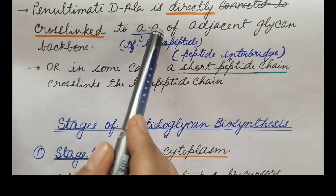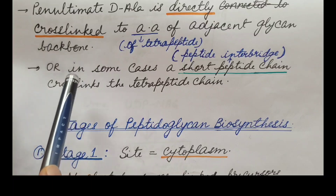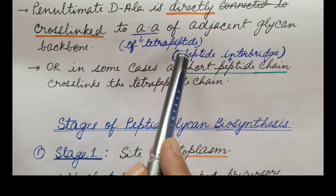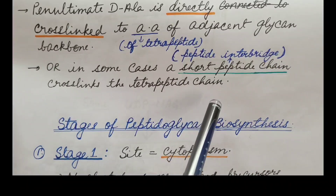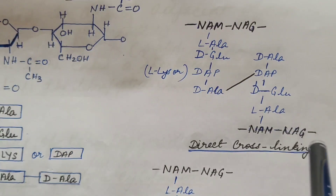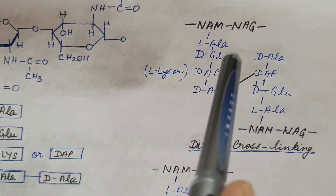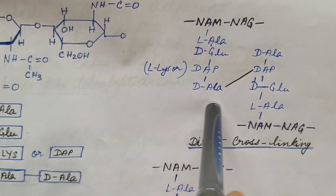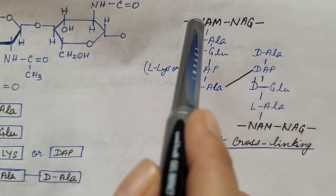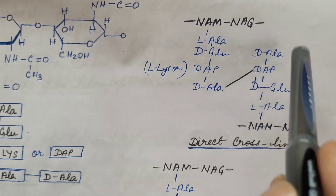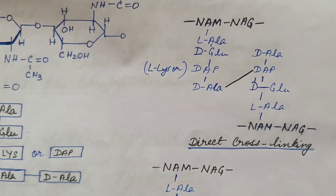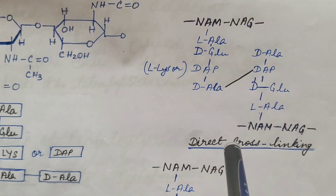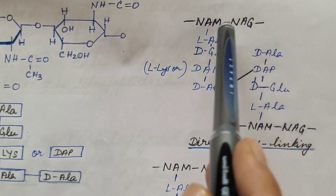The penultimate D-alanine is directly cross-linked to an amino acid of the tetrapeptide of the adjacent glycan backbone — in some cases to diaminopimelic acid. This is known as direct cross-linking. In some cases, a short peptide chain called the peptide interbridge cross-links the tetrapeptide chains of adjacent glycan backbones instead.